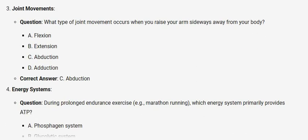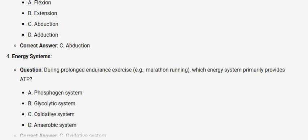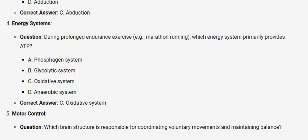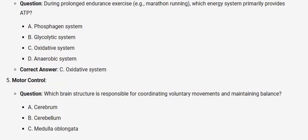Energy systems. Question: During prolonged endurance exercise, e.g. marathon running, which energy system primarily provides ATP? A. Phosphagen system. B. Glycolytic system. C. Oxidative system. D. Anaerobic system. Correct answer: C. Oxidative system.